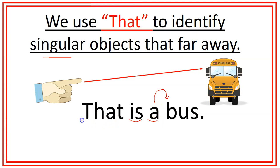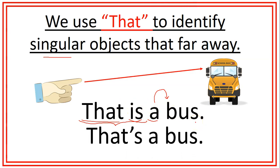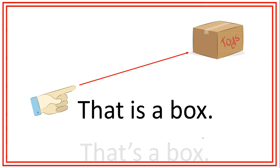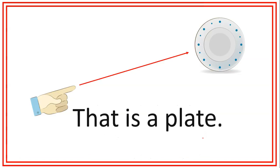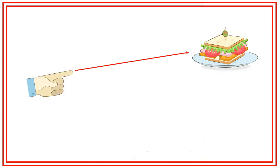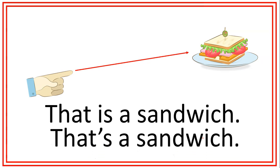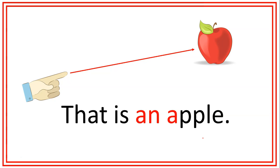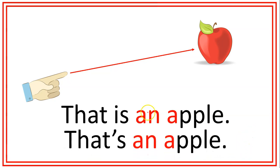Something important: the word that and the word is can be contracted. So you can say that is a boss or you can say that's a boss. Both sentences are correct — the first is the complete form and the second is a contraction. Now let's see some more examples. That is a box / that's a box. That is a plate / that's a plate. That is a sandwich / that's a sandwich. That is a glass / that's a glass. That is an apple / that's an apple. Remember, we are using an because apple starts with a vowel.